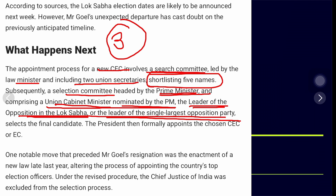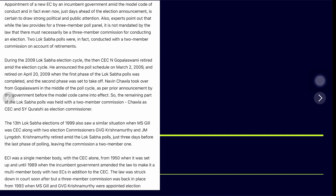Once the selection committee selects a new election commissioner, until then the post will remain vacant. This will effectively be the first Lok Sabha election where, before Arun Goyal's resignation, the commission was already a two-member body — one CEC and Arun Goyal — since one member had retired in February. With this resignation, if the selection committee does not decide on new names before the Lok Sabha elections, it will be the first time the election is conducted under a one-member or at most two-member body.